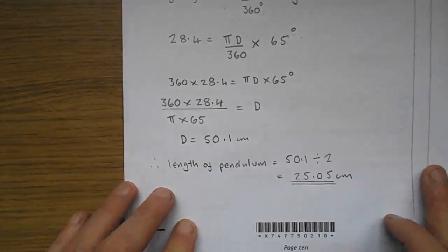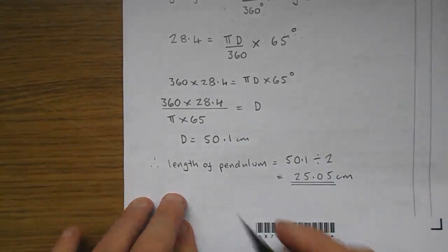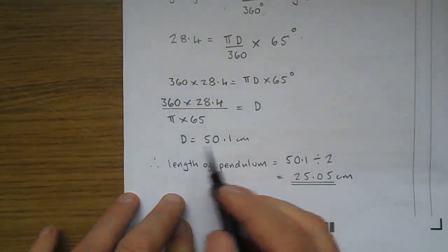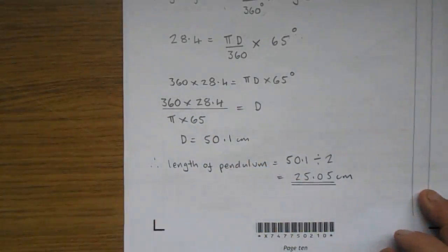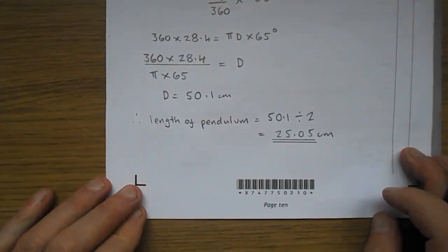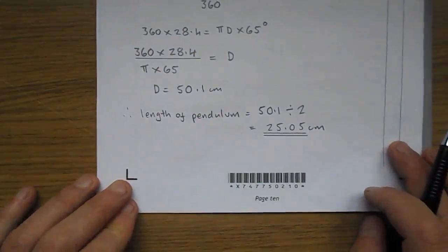Then finally, I've moved the pi times 65 down and I've left d up there. So we've got like changing the subject of the formula, if you remember that. Put it into your calculator and you get d. Don't forget, d is the diameter, 50.1. The pendulum is a radius, so it's half of that and I get 25.05.